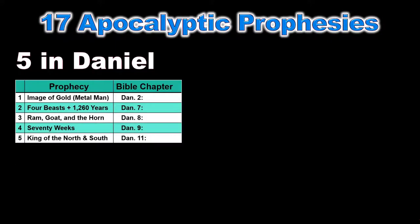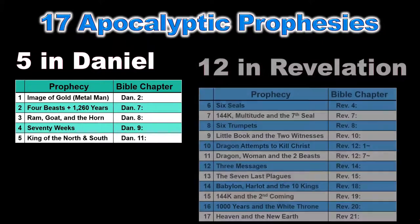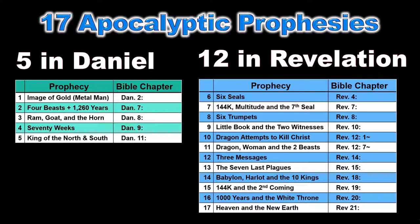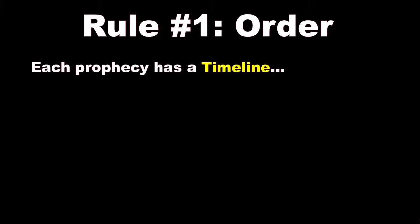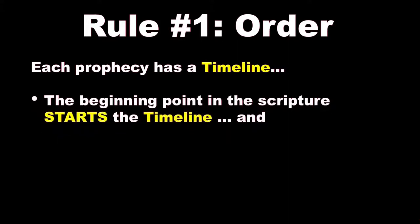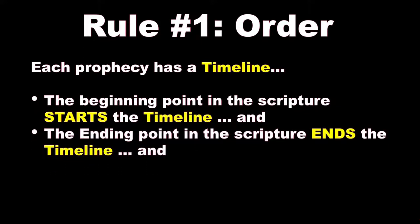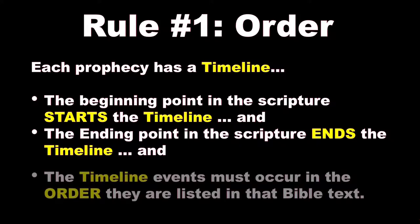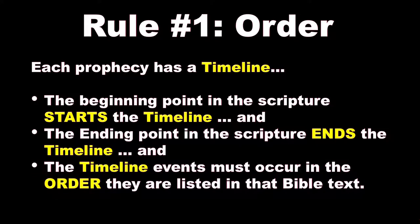These four simple rules will help us to understand apocalyptic prophecies. Did you know that there are 17 apocalyptic prophecies in the Bible? There are five in the book of Daniel and 12 in the book of Revelation. Rule number one is order. Each prophecy has a timeline. The beginning point in the scripture starts the timeline, and the ending point in scripture ends the timeline. The timeline events must occur in the order that they are listed in that Bible text.